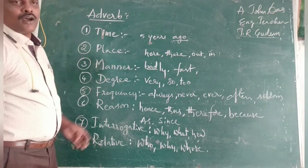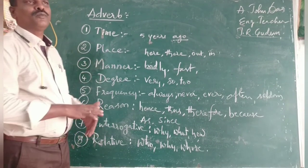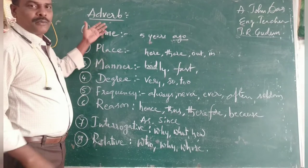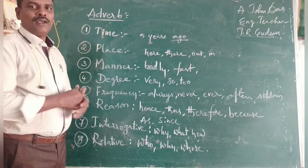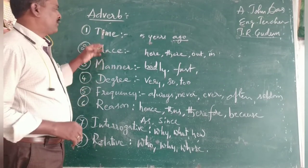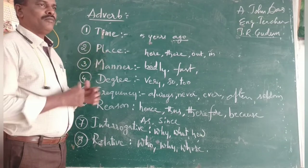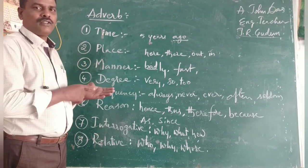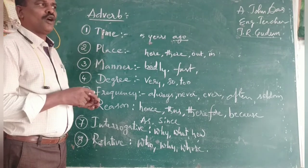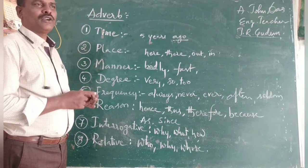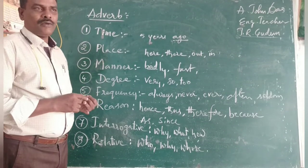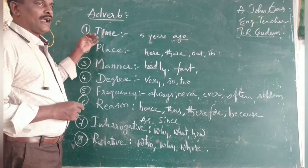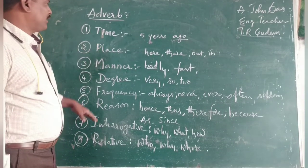As we have completed noun, pronoun, and adjectives, now I am going to explain about the adverb. Adverb is having eight kinds. We have nouns with eight kinds, pronouns eight kinds, adjectives fifteen — and again adverbs eight kinds. So this adverb is of eight kinds.